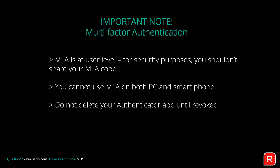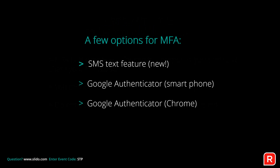MFA cannot be used on both a PC and smartphone at the same time — it needs to be one or the other. It is normally recommended to use your phone. There are three options for MFA: SMS text, Google Authenticator app on your smartphone, or the Google Authenticator Chrome extension if you don't have a mobile. You only need to choose one of these options.